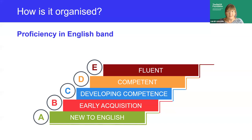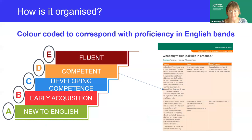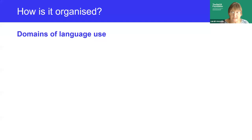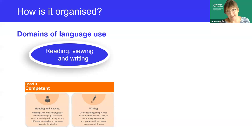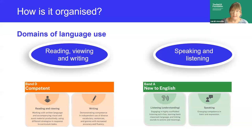We're also planning to update the tracker which accompanies the Bell Foundation assessment framework so that it'll be linked to the new strategies — hoping this will be operational next year. The guidance document is also colour-coded to correspond to the proficiency bands, so you can see at a glance which band you're looking at. The guidance and strategies are divided into those which are more useful for reading, viewing and writing — called literacy — and those for speaking and listening, i.e. oracy, with icons for quick navigation.